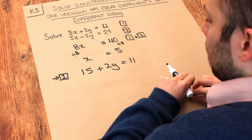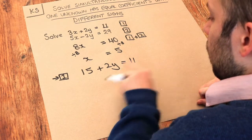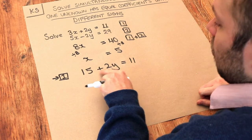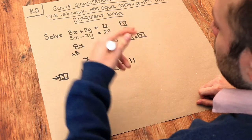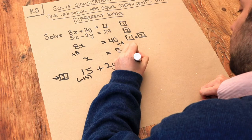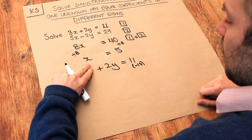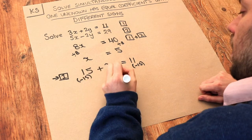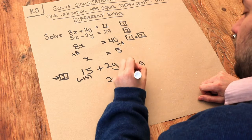And we want to get y on its own now to solve for y. So y has been multiplied by 2, then we're adding 15. We want to undo that last thing we did, so we want to minus 15 from both sides, subtract 15. That gets rid of this 15, leaving just 2y. 11 minus 15 is minus 4.